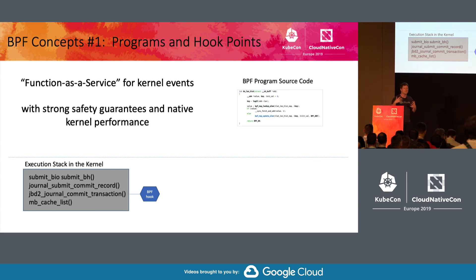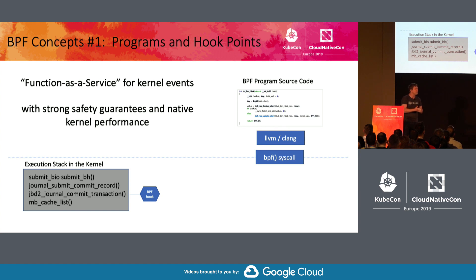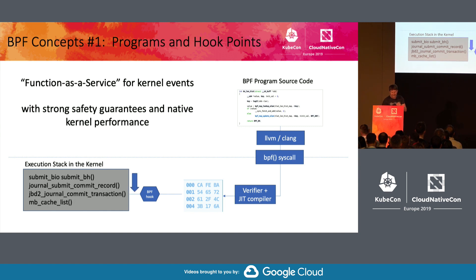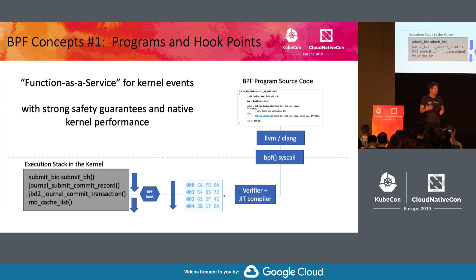You write a BPF program in a pseudo-C language, compile it to BPF bytecode, and use a BPF syscall to load it into the kernel and specify the hook point. Before the kernel runs your code, it sends it through a verifier — this is how the sandboxing happens — to make sure that code can't do anything malicious to your kernel and can only access data it should. That code then gets attached to the requested hook point. When the kernel executes to that point, it jumps to your code, passing it the associated data that kernel function had access to. You can do whatever processing you want, then the kernel continues. It's a very lightweight operation.